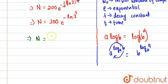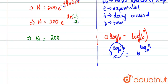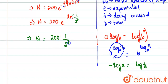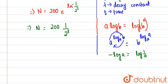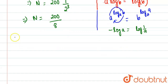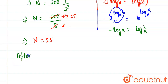Using −ln(2³) = ln(1/2³), we get N = 200 · e^(ln(1/8)). Applying the identity e^(ln x) = x, this simplifies to N = 200 · (1/8) = 200 ÷ 8. Cancelling by 4, we get 50 ÷ 2 = 25. So N = 25 nuclei remain after 9 seconds.